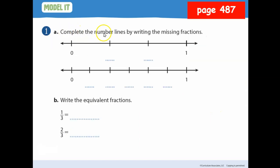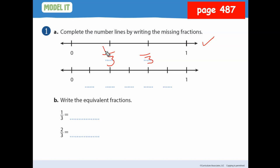It says complete the number lines by writing missing fractions. Look at the top one right here. How many sections are there? I'm going to go from zero and jump each one: one, two, three. So my denominator is three. From zero to the first fraction is one-third, then two-thirds, and then one right here is actually three over three — three-thirds.